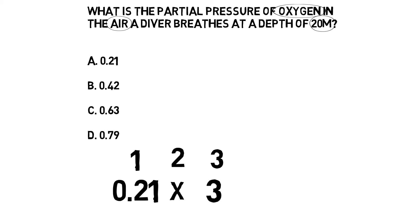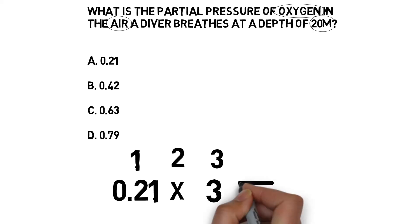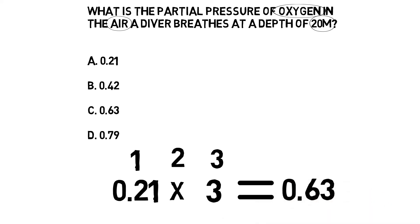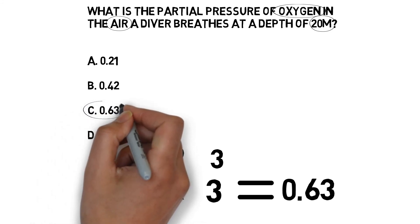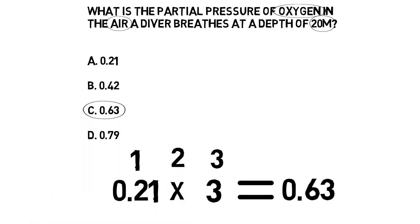We now have all the information we need. It is 0.21 times 3, which gives us an answer of 0.63 atmospheres. The partial pressure of oxygen when breathing air at 20 meters would be 0.63 atmospheres — that would be answer C.